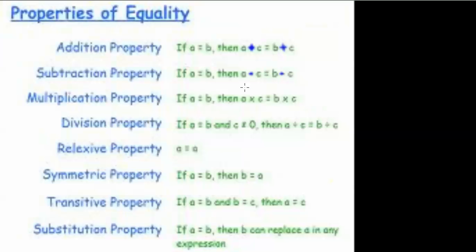The multiplication property: if a equals b, then a times c equals b times c. The division property: if a equals b and c does not equal 0, then a divided by c equals b divided by c.